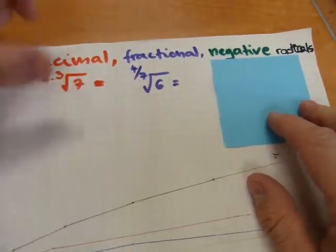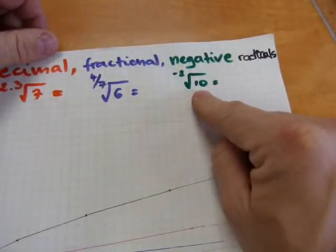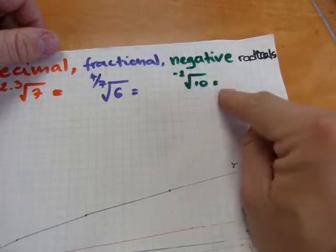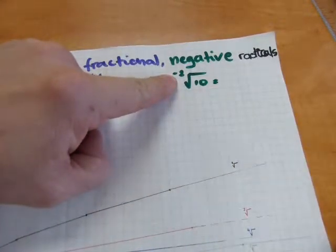Fractional ones look similarly, the index number is a fractional, and negative radicals don't mean that the radicand here is a negative number, or the root is a negative number. We mean that the index number is a negative number.